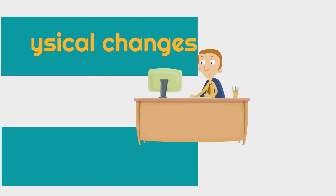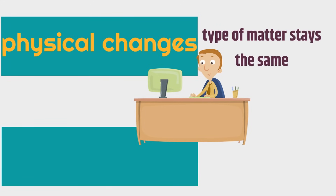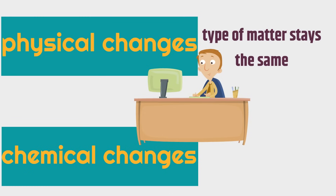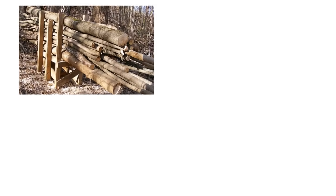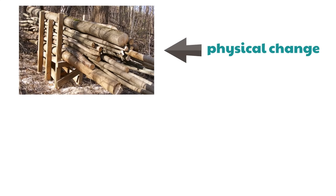With physical changes, the type of matter stays the same. With chemical changes, the type of matter changes. Here we have a picture of some huge logs. Trees were cut down to make these logs. When the trees were cut, was that a physical or a chemical change? A physical change, because the type of matter — the wood — did not change. The type of matter did not change. It was a physical change.